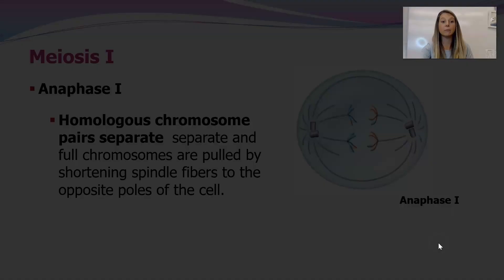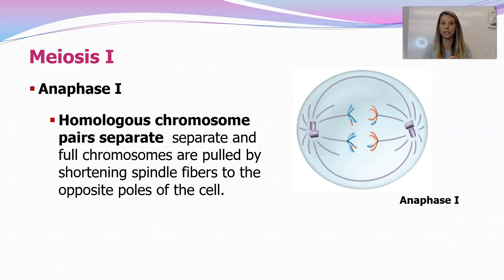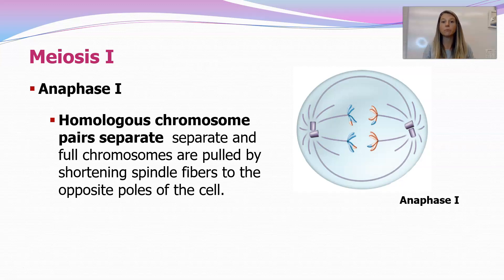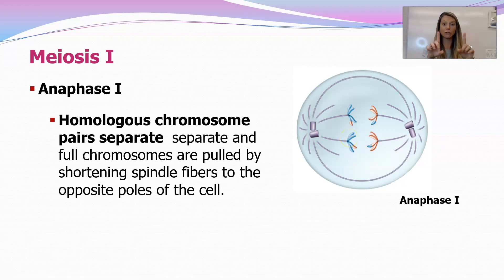When they get pulled apart during anaphase I, it's an entire chromosome heading to the pole. In anaphase I of meiosis I, the homologous chromosome pairs separate, and full chromosomes are pulled by those shortening spindle fibers to the opposite poles of the cell. That is different from anaphase of mitosis — in mitosis, a chromatid was being pulled to the pole. Here, a full chromosome is being pulled to the pole in anaphase I.